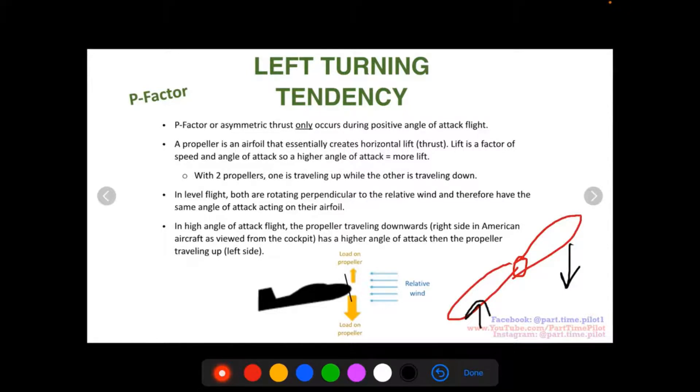This one over here is going to have a higher angle of attack. So that's this one on this side of the aircraft, right here. And then the one traveling up over here, it's going to have a smaller angle of attack.